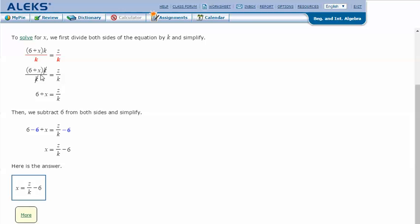And then we can drop the parentheses now that there's not anything left to multiply by. So then we just have 6 plus x equals z over k.